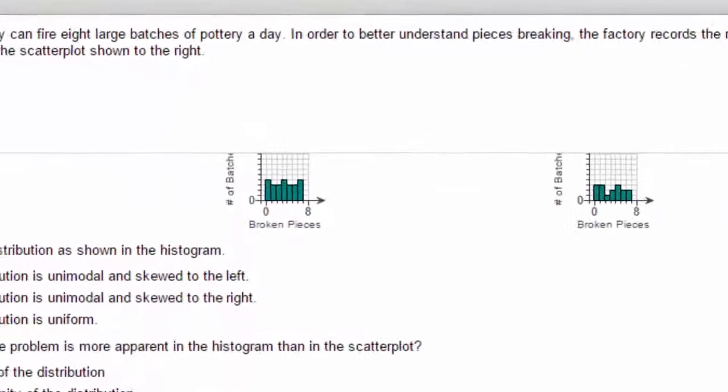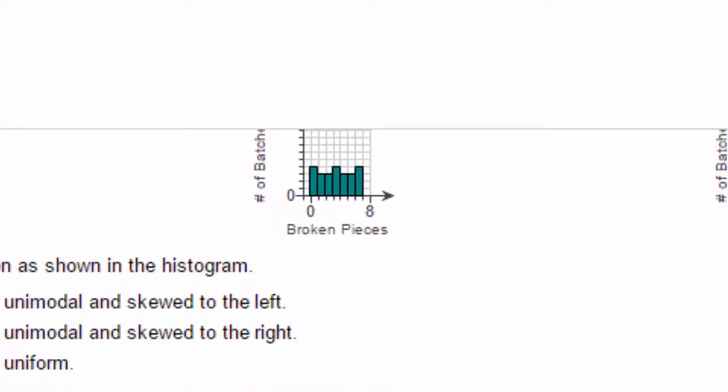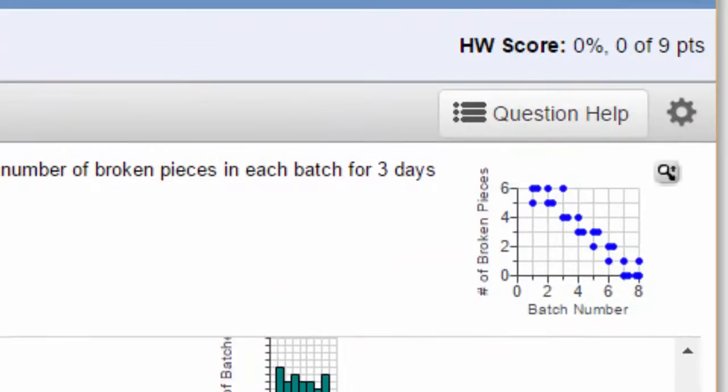What features of the problem is more apparent in the histogram than in the scatter plot? The histogram is going to show us the number of broken pieces, but it doesn't really show us what happens per batch. We can see the uniformity of the distribution. That's what the histogram is going to show us—the shape, where we were not able to see that up here in the scatter plot.